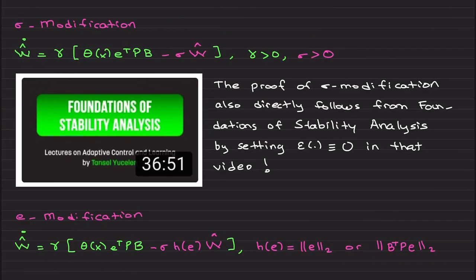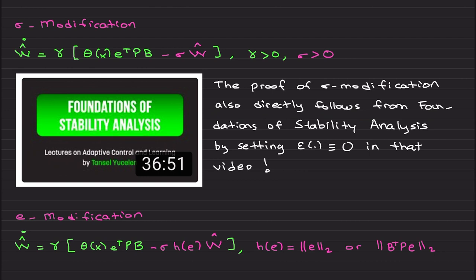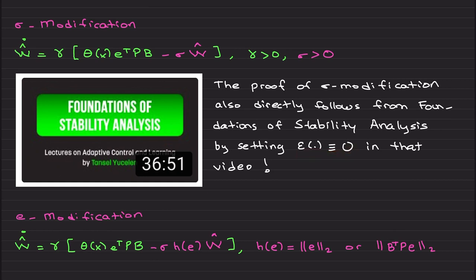Sigma modification is simpler and quite similar to the leakage modification from the previous video — you just add this term. Its proof follows directly from the foundations of stability analysis video without any tricks: go to that video from the beginning, set the epsilon term to zero, and the boundedness proof is there. I also did not cover the proof of e-modification in detail, but I want to mention it. In my personal experience I prefer sigma modification, though both sigma and e modification are great tools — you can explore them in code yourself.